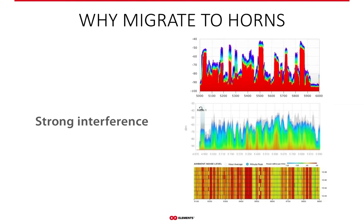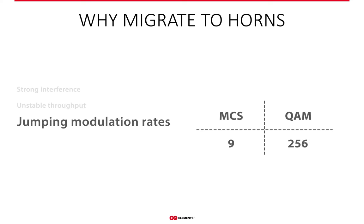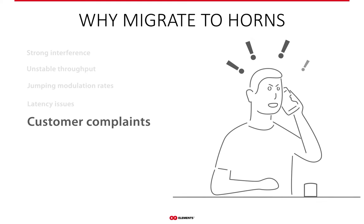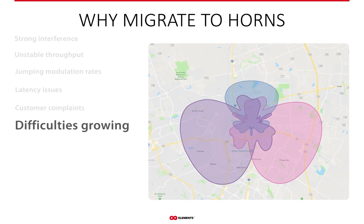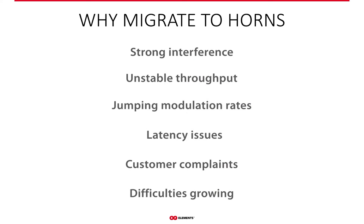First, everyone should ask themselves: why should I migrate to Horns in the first place? There are several symptoms in WISP networks that indicate migration to another technology — in this case, Horns — might be a good idea. These are high noise background, unstable network throughput or jumping modulation rates, latency issues, or way too many customer complaints. All these together might result in your inability to grow your WISP business.